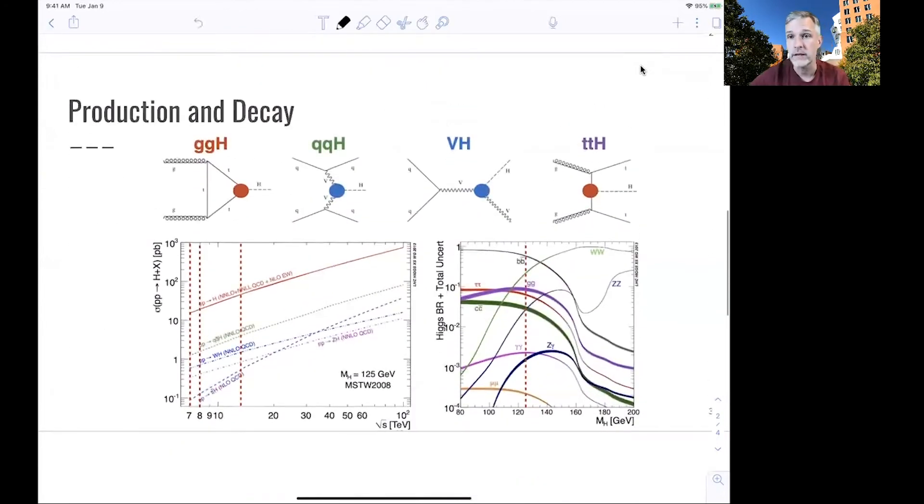In more general terms, there's not just one mechanism to produce Higgs bosons, but various. The leading ones are shown here. We just looked at the first one, which is called the gluon fusion channel, where two gluons fuse together to form a Higgs boson.